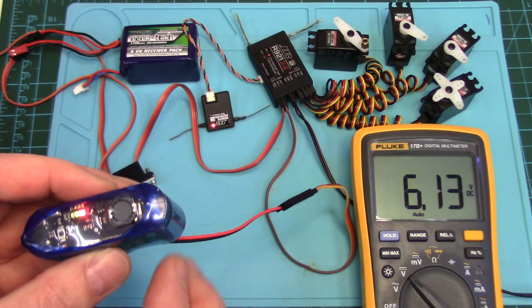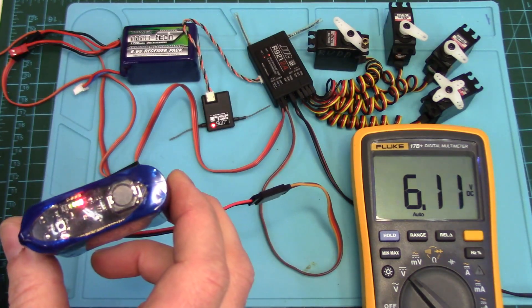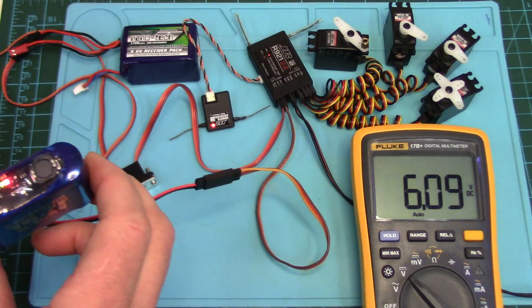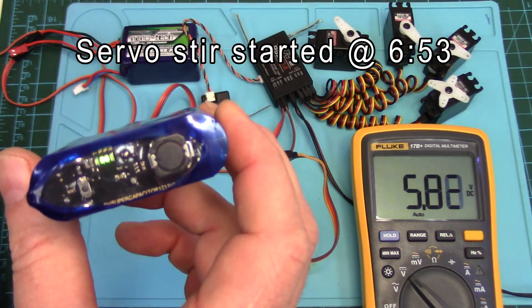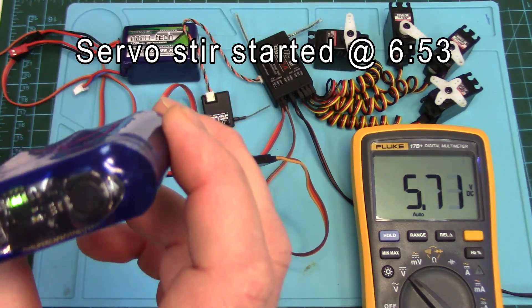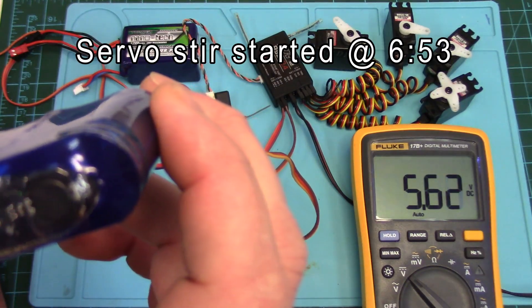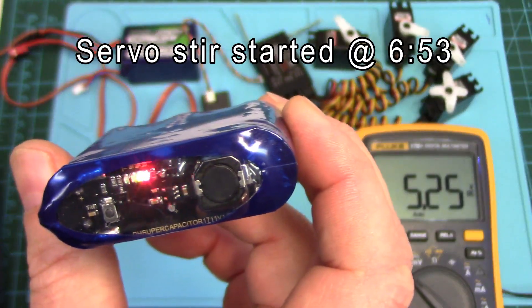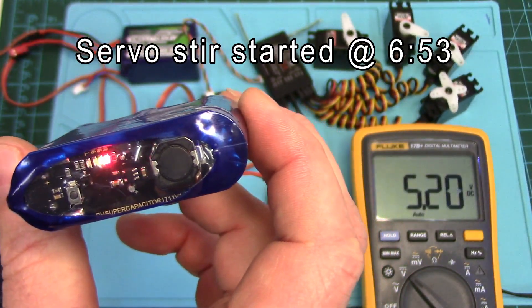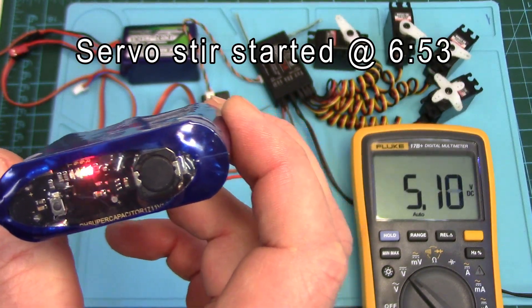On a helicopter either, even when the servos aren't moving, there's going to be load on the rotor disc or even an airplane. So let's start moving the sticks around here. And we can see the voltage is decaying quite quick. We're down to two LEDs, one LED, voltage is down to almost five volts now.